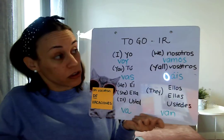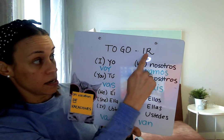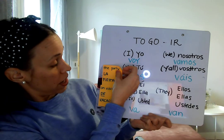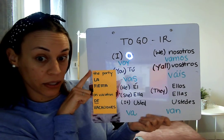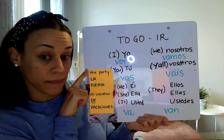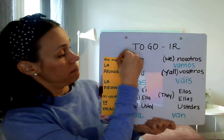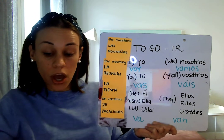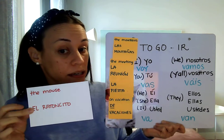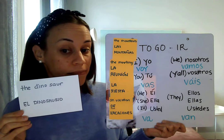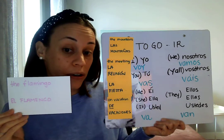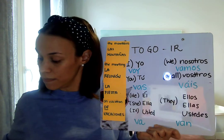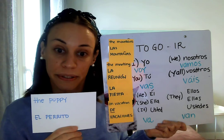Today you have learned how to use 'to go,' or ir, in a simple present tense sentence. You have learned the vocabulary: on vacation — de vacaciones; the party — la fiesta; the meeting — la reunión; and the mountains — las montañas. You have also learned: the mouse — el ratoncito; the dinosaur — el dinosaurio; the flamingo — el flamenco; the squirrel — la ardilla; and the puppy — el perrito. Very good job!